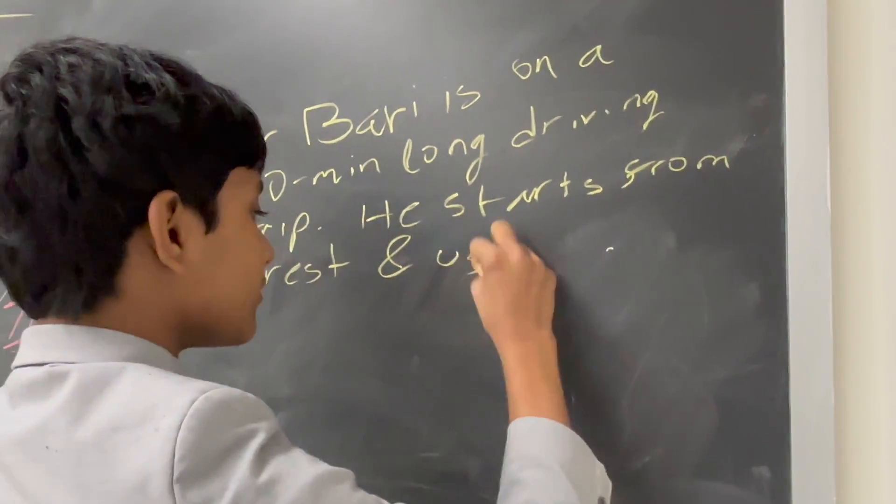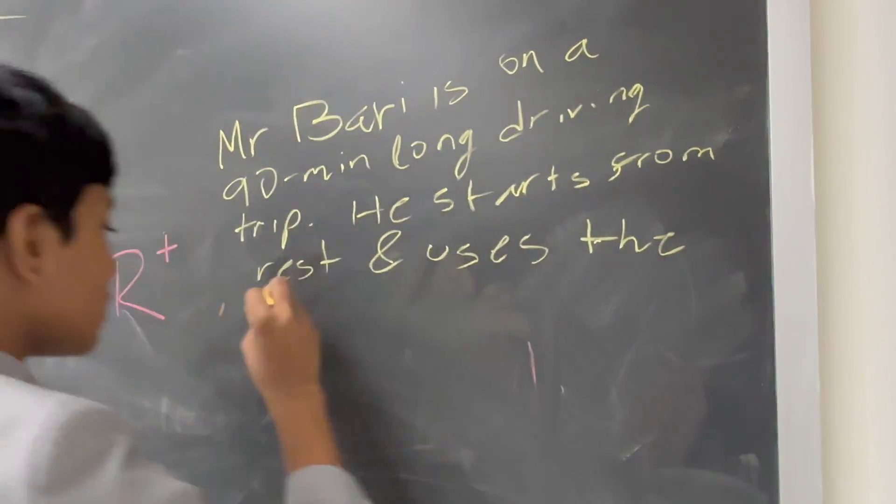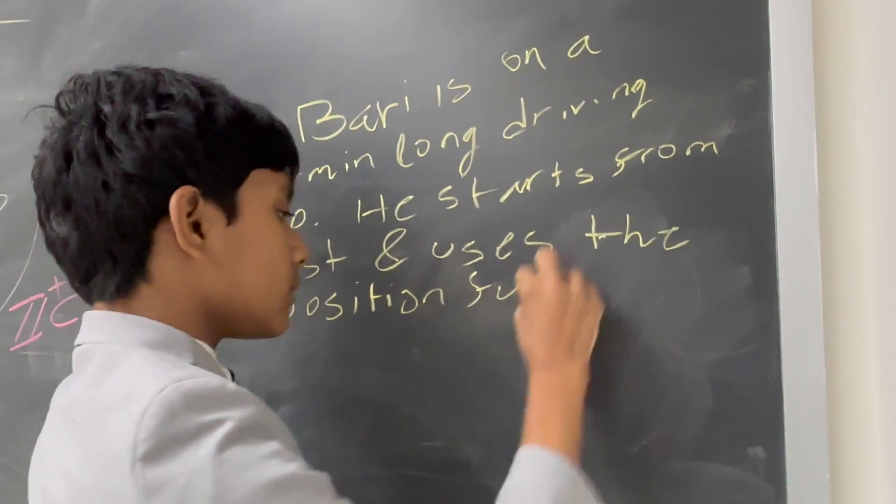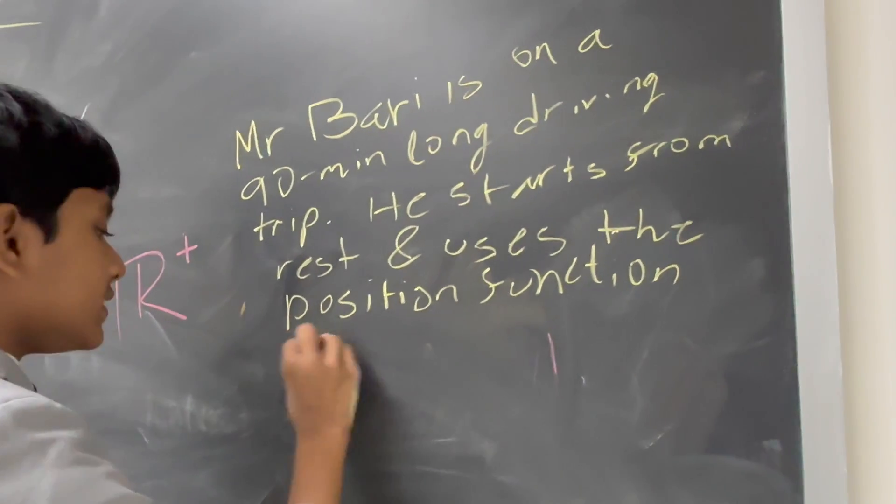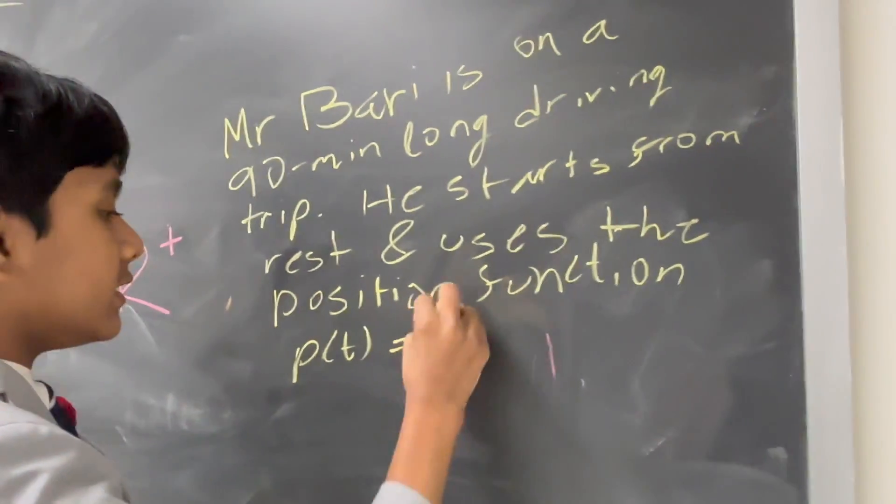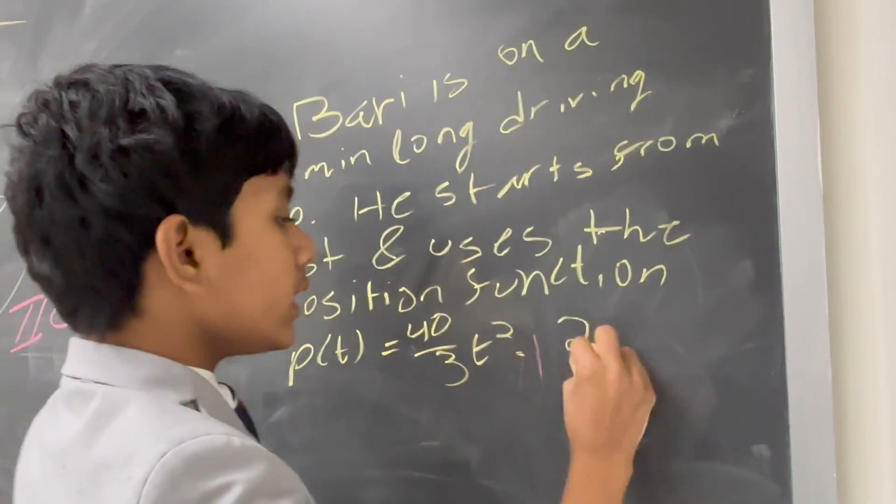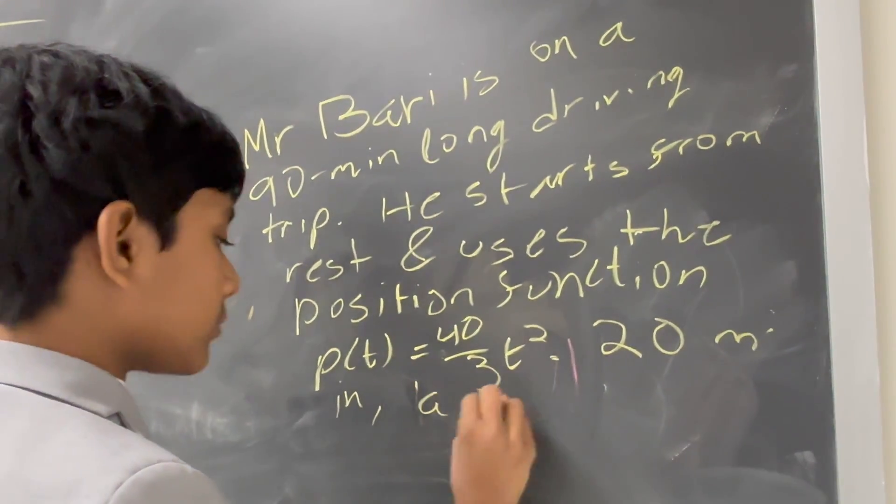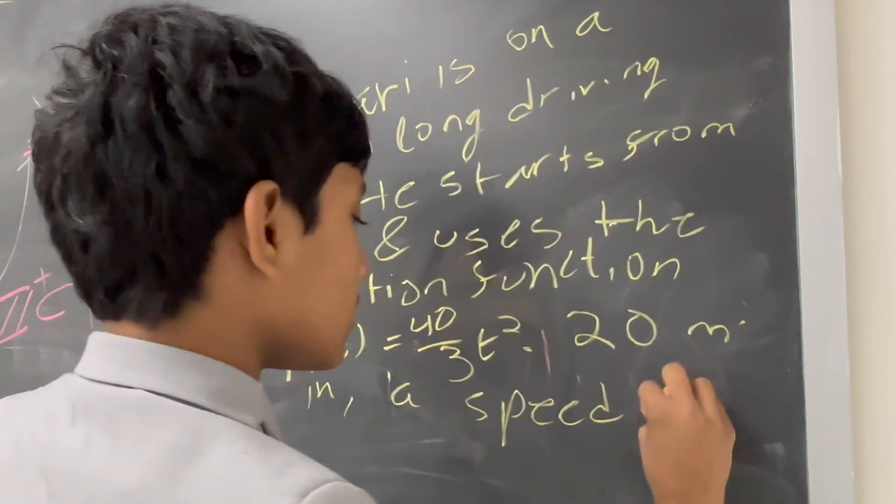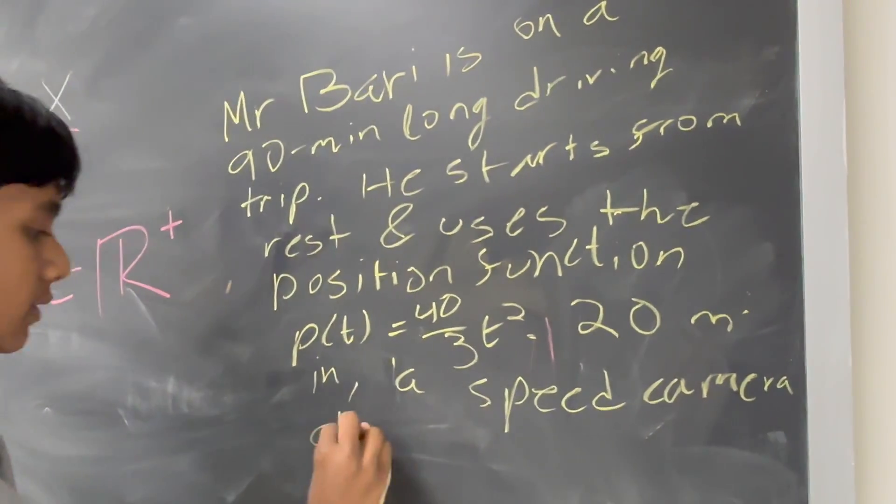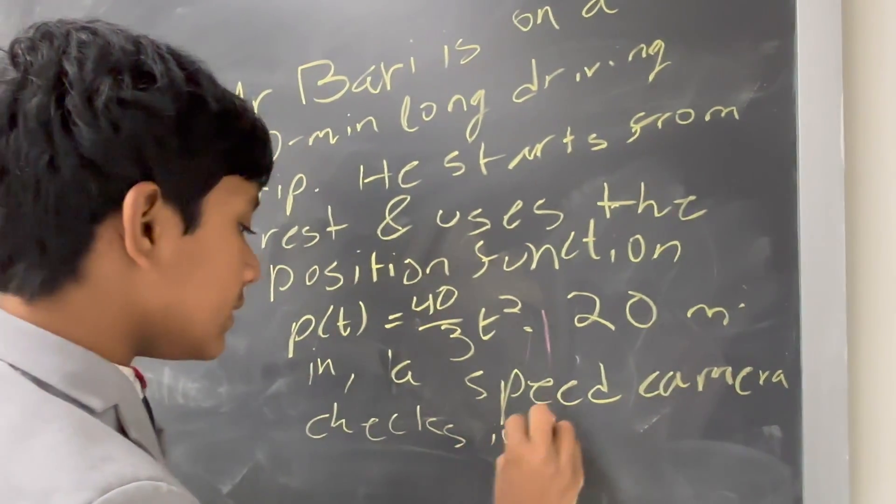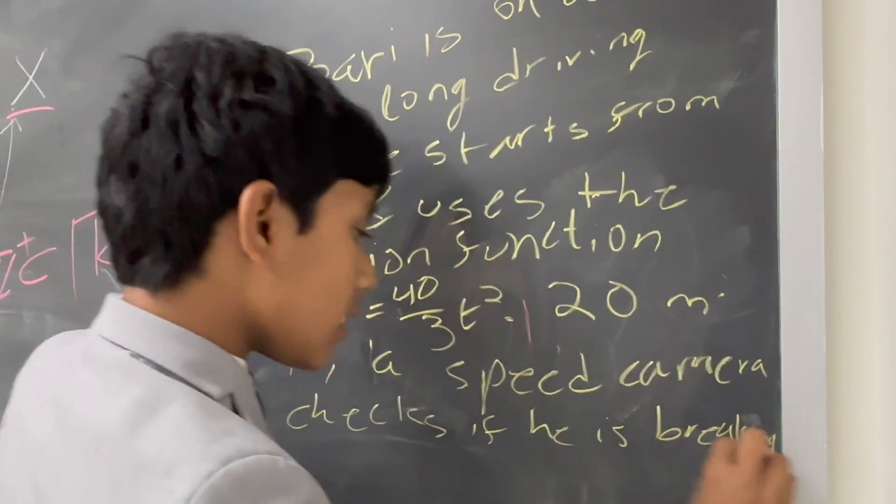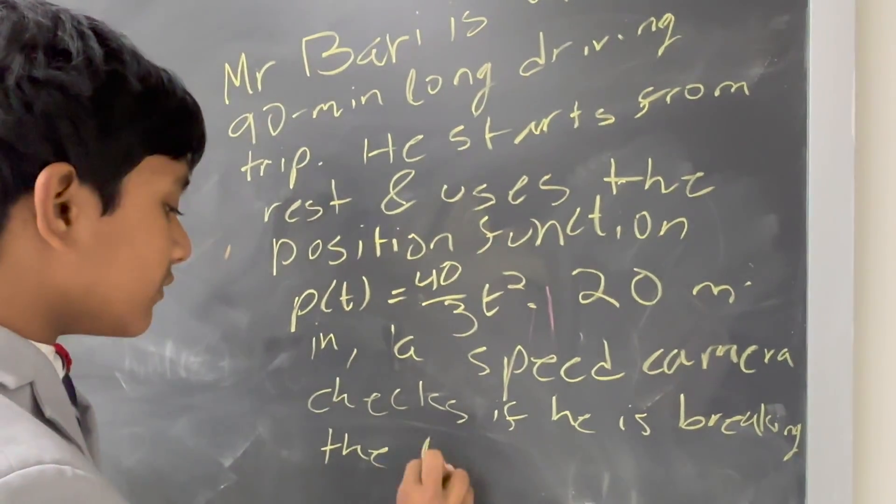And uses the position function P of T is equal to 40 over 3 T squared. 20 miles in, a speed camera checks if he is breaking the limit of 25 MPH.